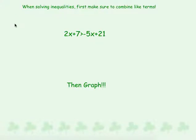First, with these inequalities with variables on both sides, just like we do with equations, we need to make sure to combine like terms first, move our variables to the left side, and then solve for that variable. So in this case, we look at each side and say 2x plus 7 — there are no like terms to combine, so we leave it as is.